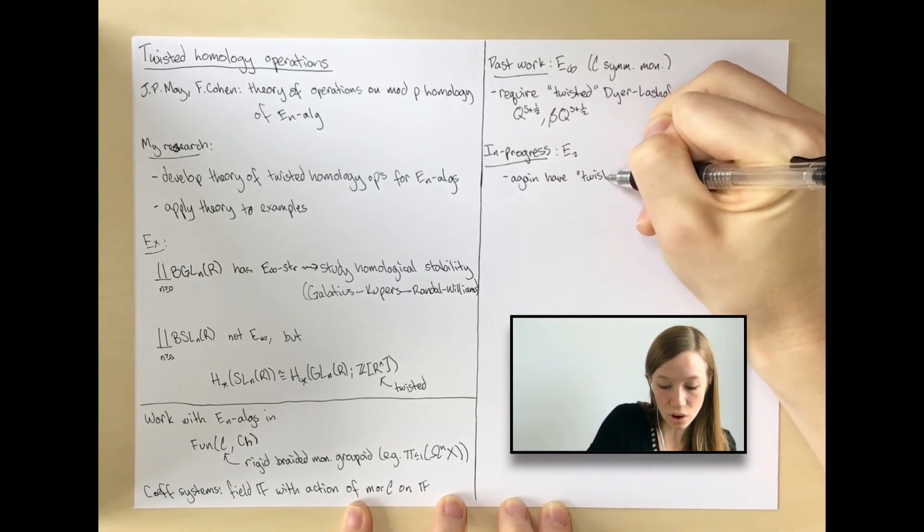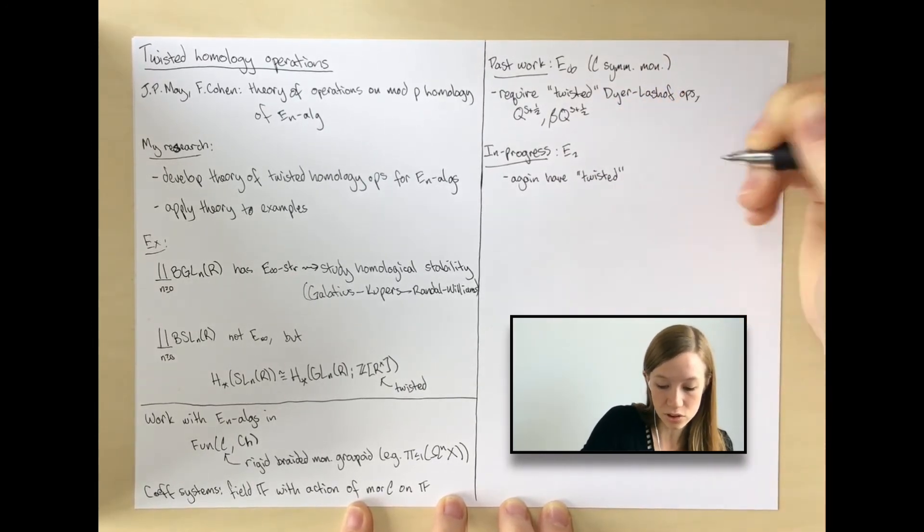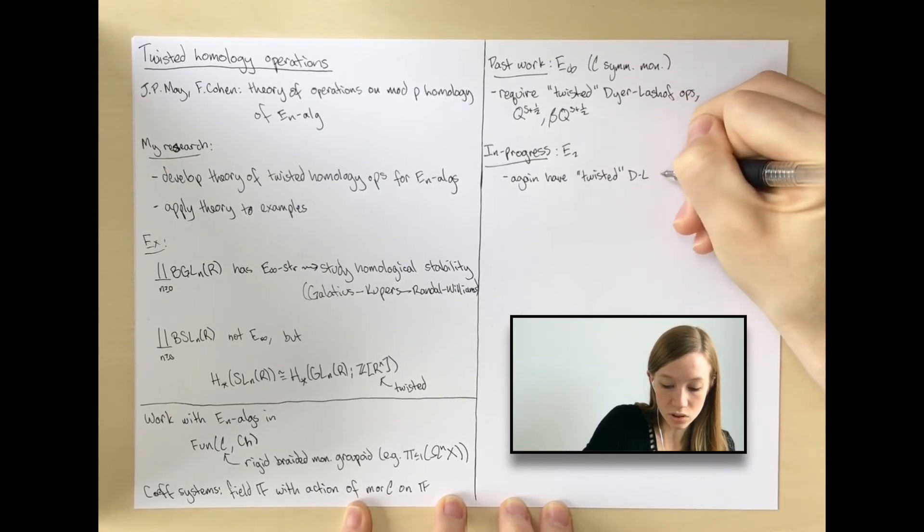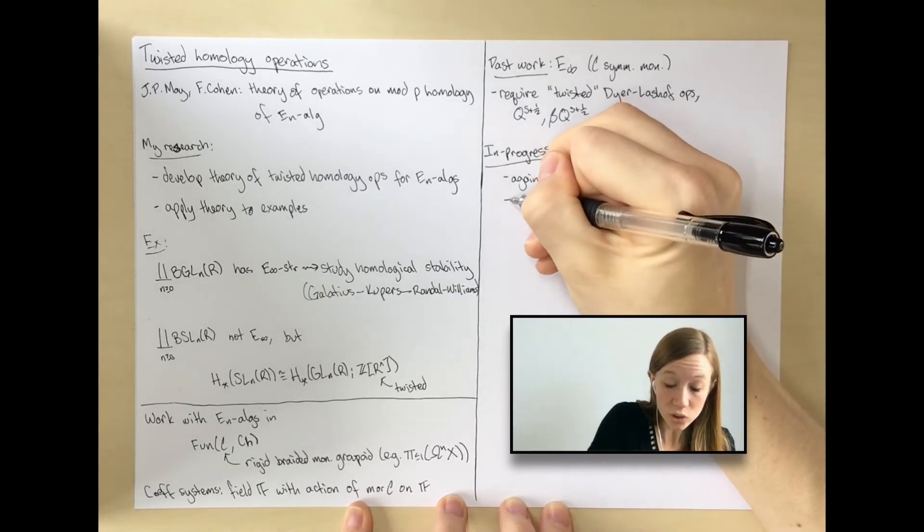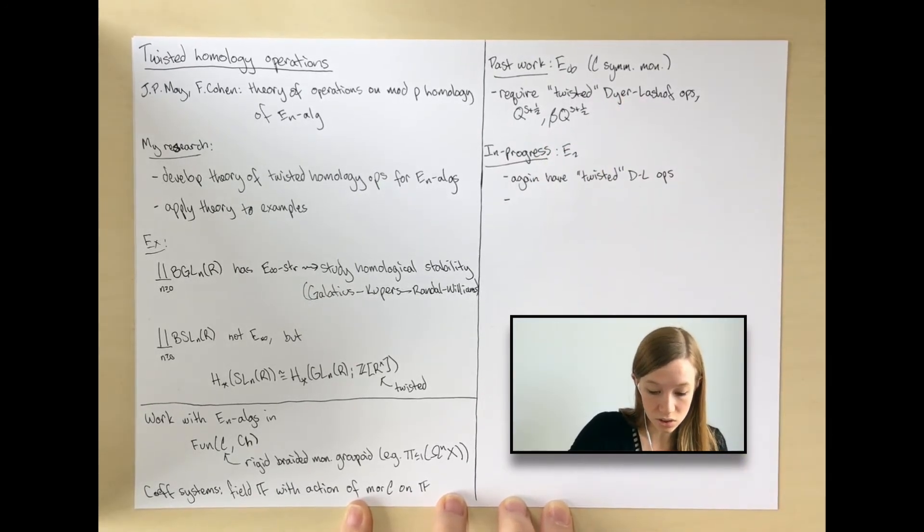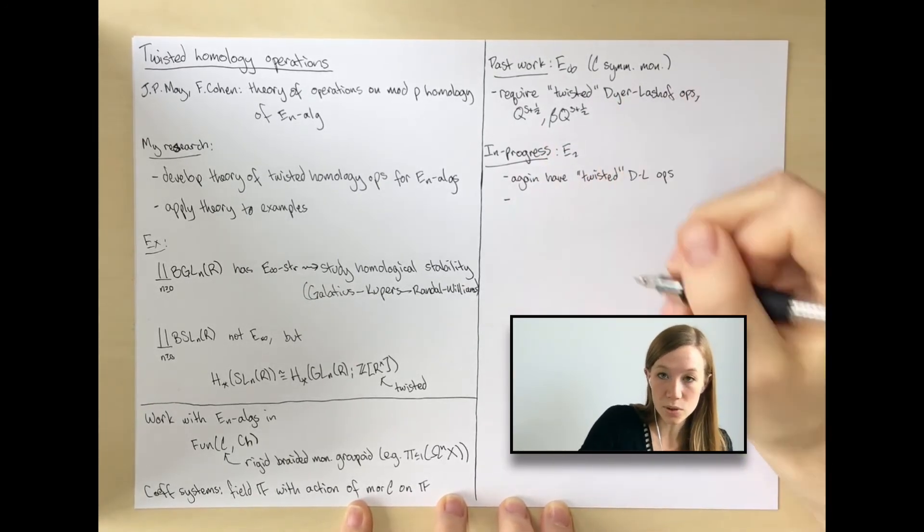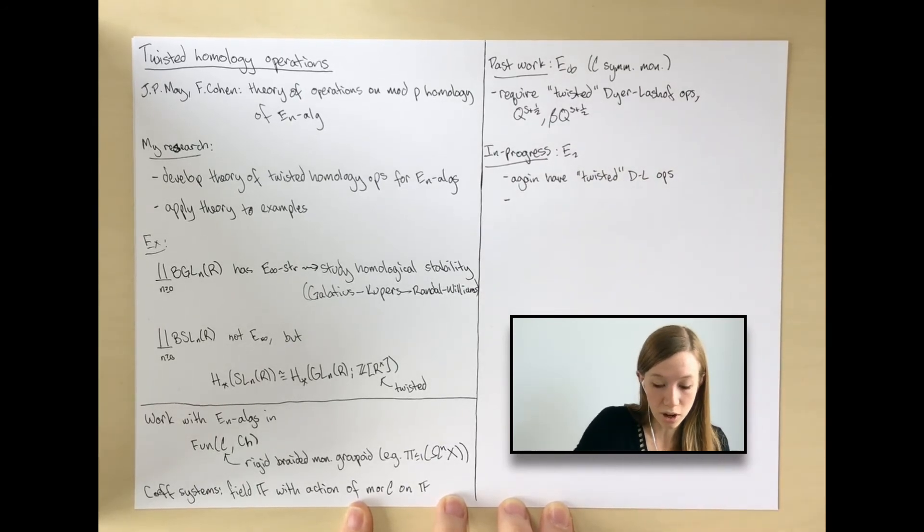Again, you have these twisted versions of the Dyer-Lashof operations. You have fewer Dyer-Lashof operations for E_2, but these twisted operations behave like they do in the E-infinity case. But what's really different, the part of this theory that's most novel, is what happens when you try to generalize the Browder bracket here.